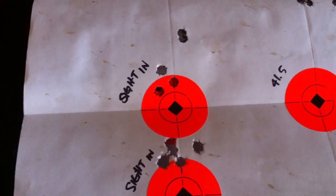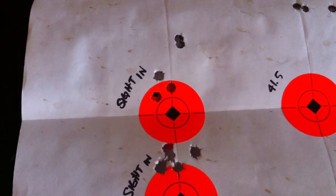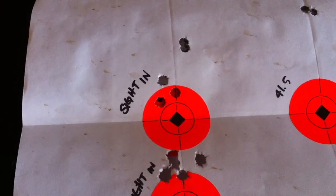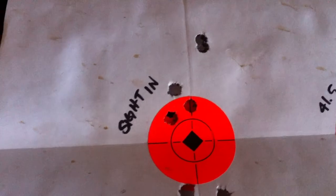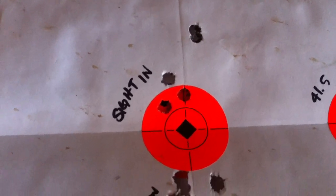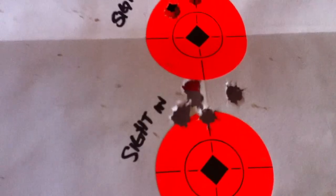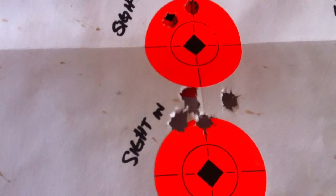This is my pet load right here, which is 43.6 grains of accurate 25-20. It's a five shot group on a cold bore. And then here's another five shot group after that.